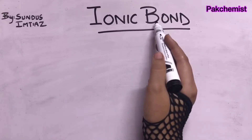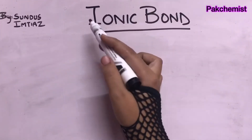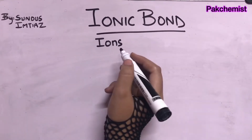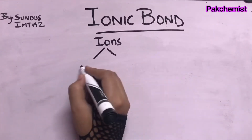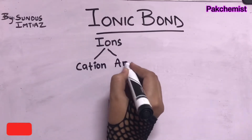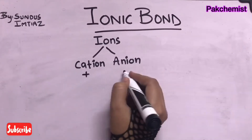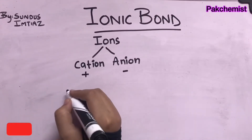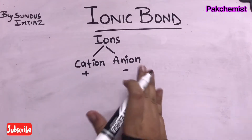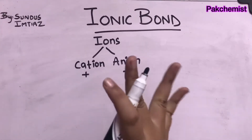The bond between the two items is ionic, meaning they will form ions. There are two types of ions: the first one is the cation and the second one is the anion. We know the cation has a positive charge and the anion has a negative charge. Both cations and anions are involved in the bond, forming a chemical bond between two atoms.